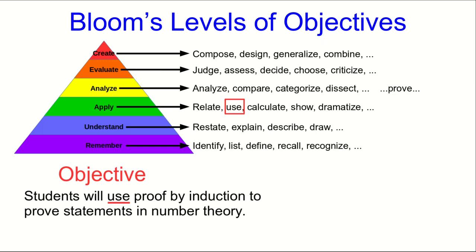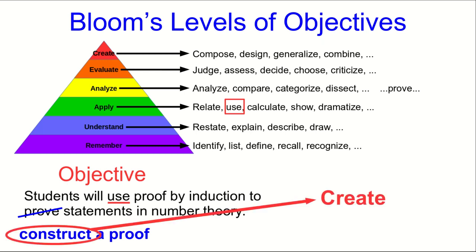Also, if you look at some of these lists, you'll often see prove appear at the analyze level. Well, that's not really what's going on here. Often, mathematicians will say construct a proof rather than just prove, and that gives a better clue of what's going on here. Construct sounds an awful lot like something at the create level, and so I would argue this objective is at the create level of Bloom's taxonomy.